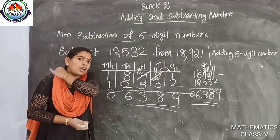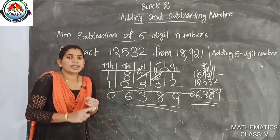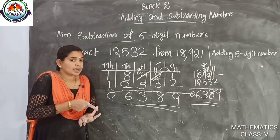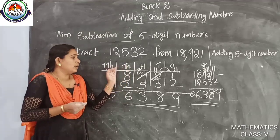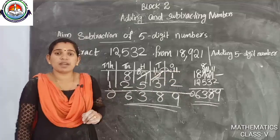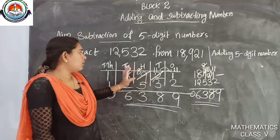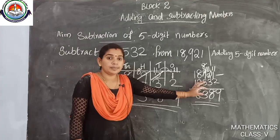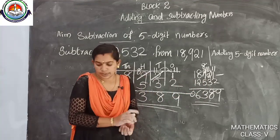Does anyone have doubt about doing this subtraction using the abacus, without abacus, place value chart, or without place value chart? We are mainly using the place value chart and without place value chart methods. Anyone have doubt for these two methods? We will do one problem from your textbook.